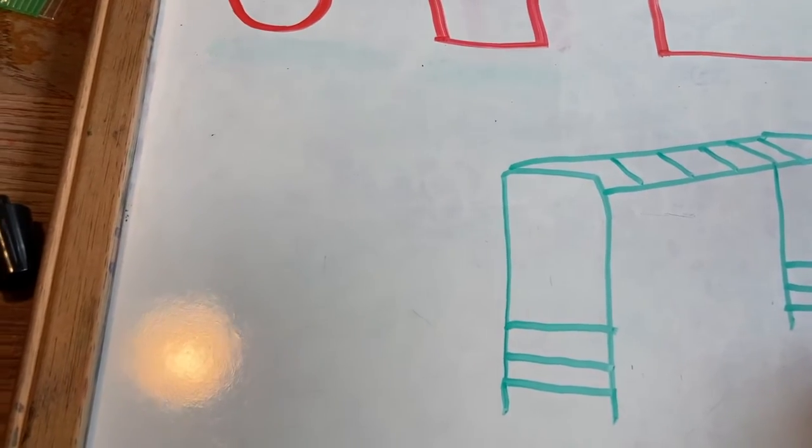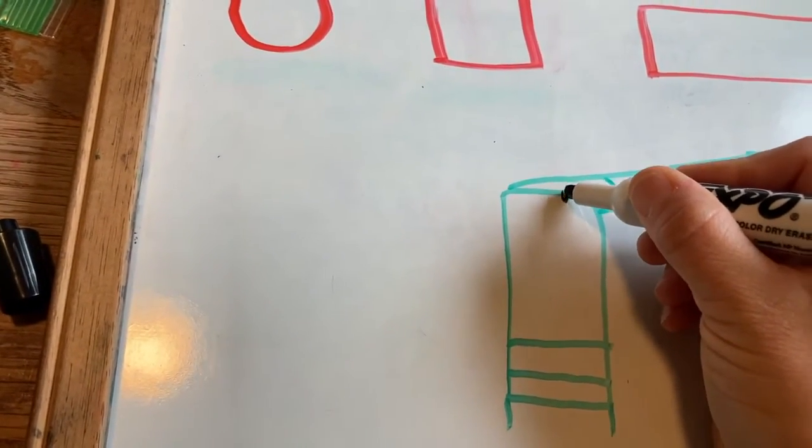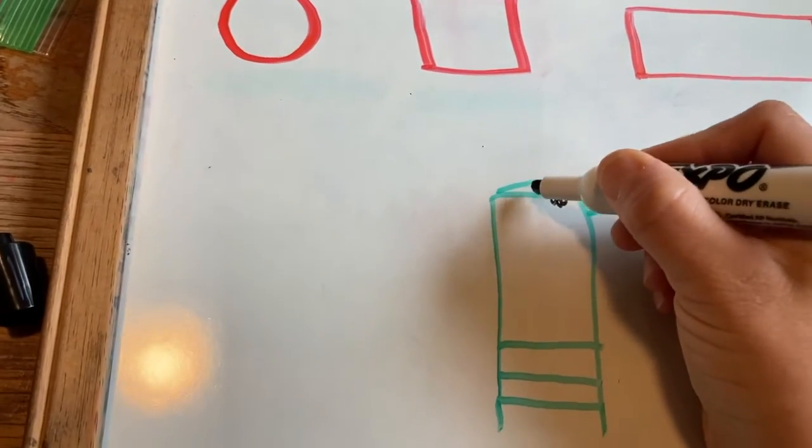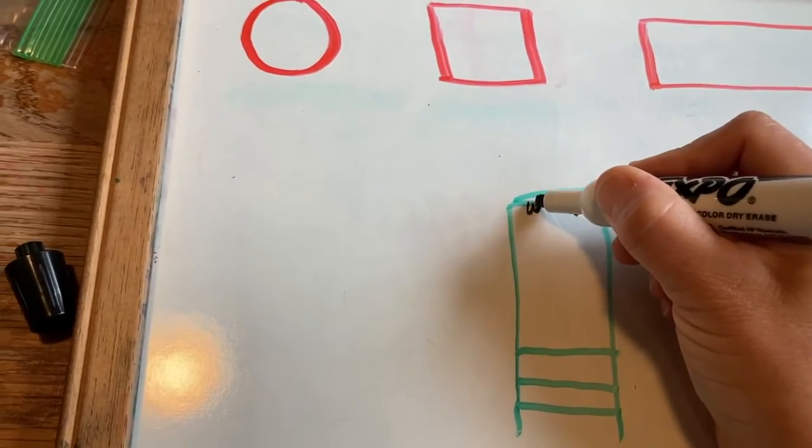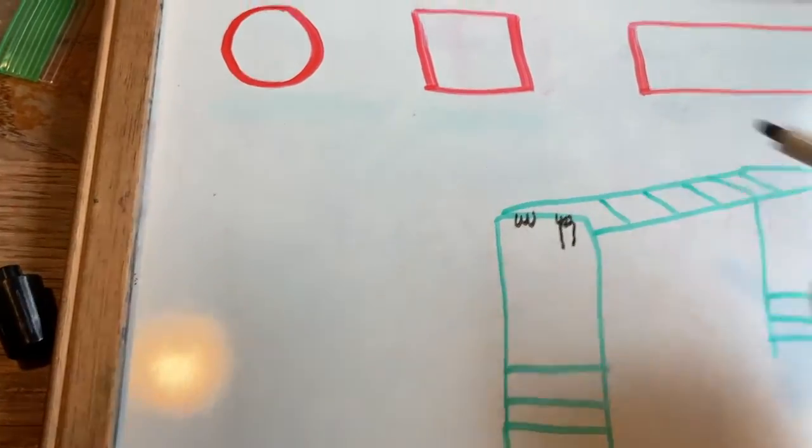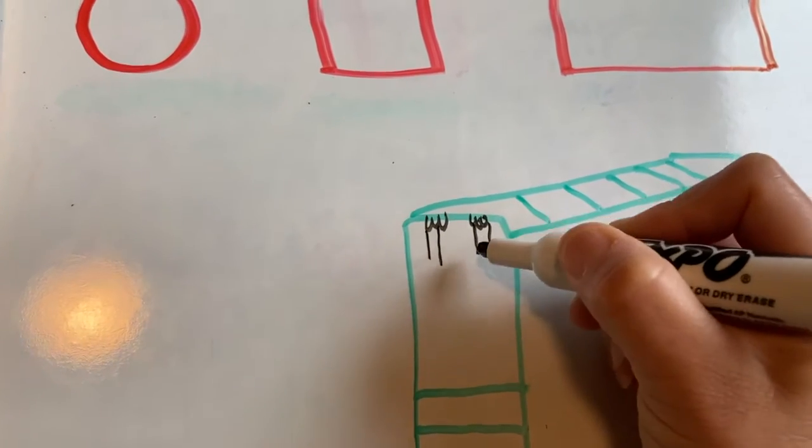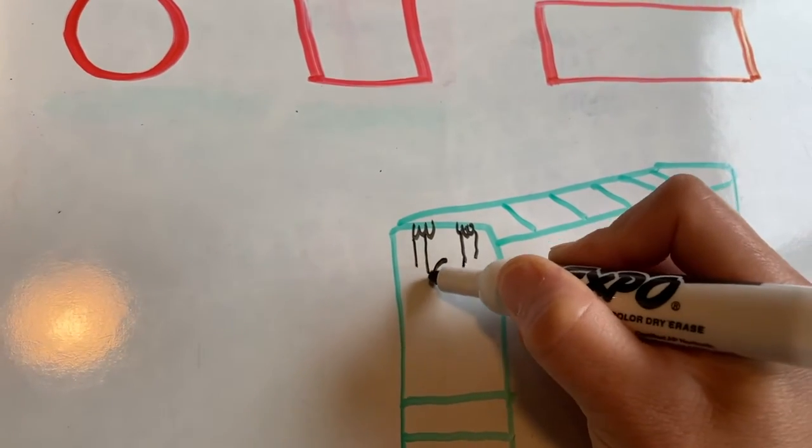Well, I'm going to draw myself hanging from the monkey bars. So here's my hands because they're holding on to the bar. I'm going to draw my arms, which are rectangles, and then I'm going to draw my head.